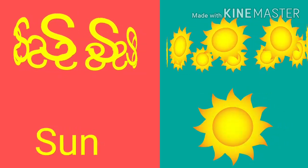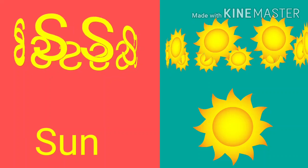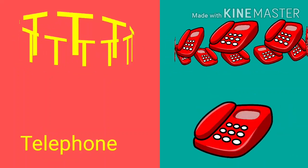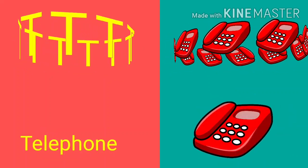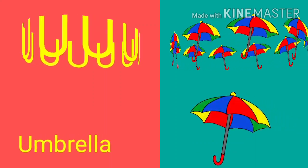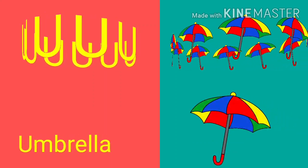S for sun, T for telephone, U for umbrella.